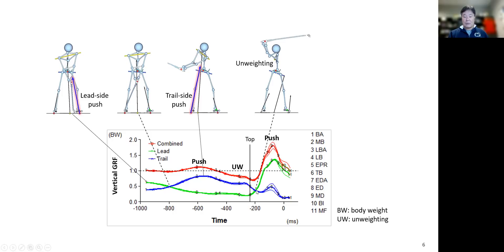At this point we have a lot of unweighting — the vertical ground reaction force is way smaller than the body weight. Typically, if you have a really active swing, the unweighting peak occurs right after the top of the backswing.